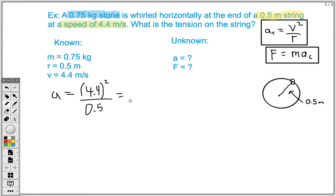4.4 squared divided by 0.5 gives us an answer of 38.72. And that's going to be, because it's acceleration, that's going to be meters per second squared.